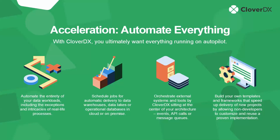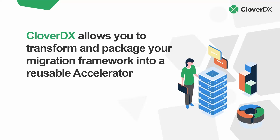With Clover, ultimately we want all data workloads — including migrations — running on autopilot, handling exceptions and intricacies of real-life processes. If there's faulty data somewhere along the way, we want to automatically handle it so it doesn't break the entire migration. We want to schedule jobs for automatic delivery to data warehouses, databases, or data lakes, and orchestrate external systems and tools by having Clover sit at the center of all events, API calls, message queues, and data systems. The real power is building templates and frameworks that allow non-developers to customize and reuse proven implementations — transforming and packaging our migration framework into an accelerator.